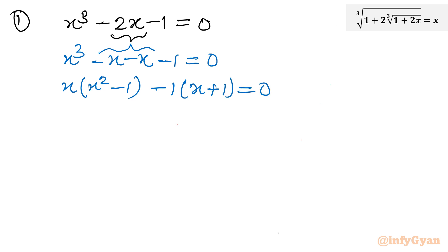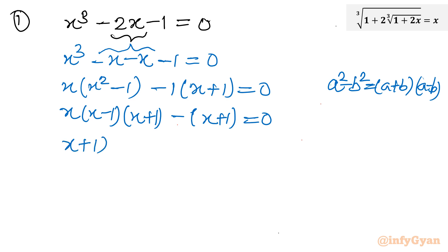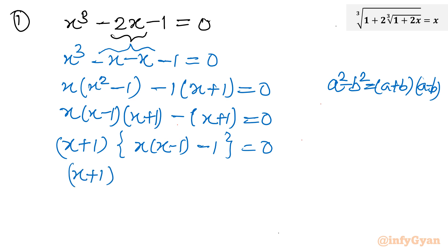You can see the difference of two squares formula is applicable. Using a squared minus b squared equals (a plus b)(a minus b), the term x squared minus 1 becomes (x minus 1)(x plus 1). So we now have x(x minus 1)(x plus 1) minus 1(x plus 1) equal to 0. Taking x plus 1 as an overall common factor, we get (x plus 1)(x squared minus x minus 1) equal to 0.